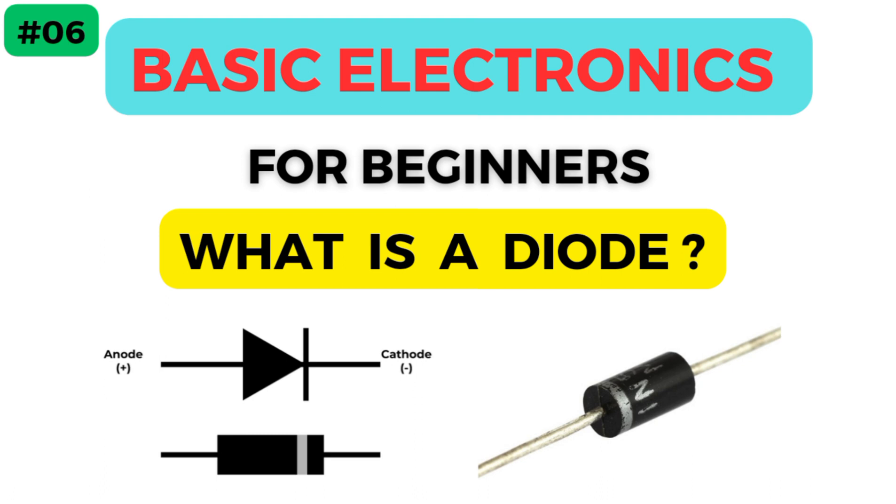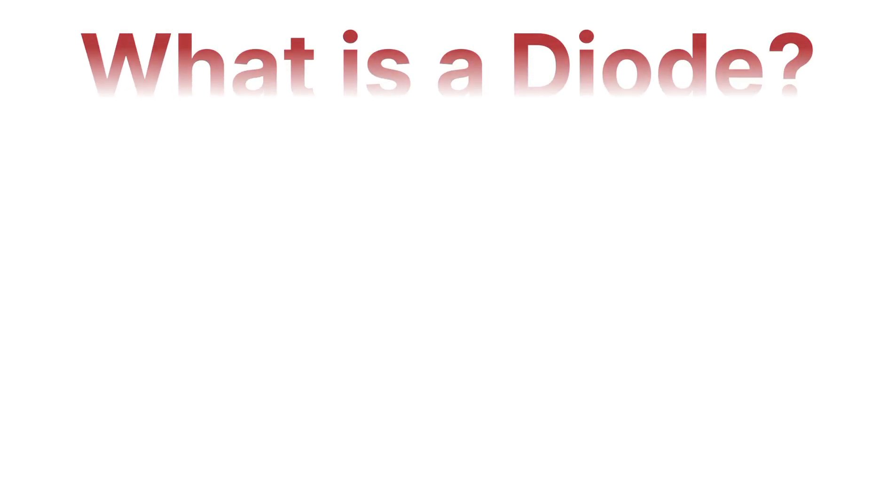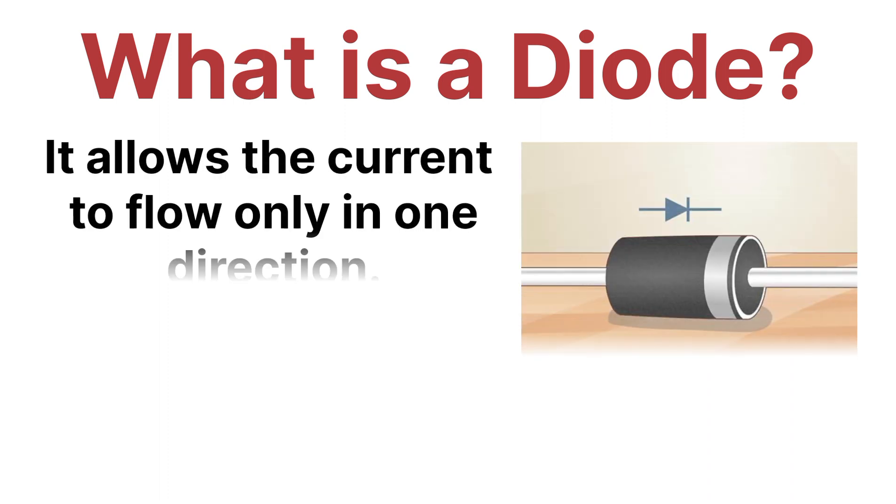A diode is a semiconductor device that essentially acts as a one-way switch for the flow of electric current in a circuit. A diode allows current to flow easily in one direction but severely restricts electric current flowing in the opposite direction.